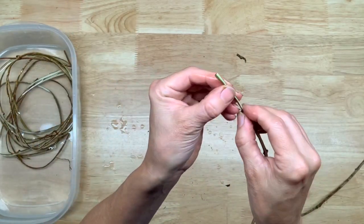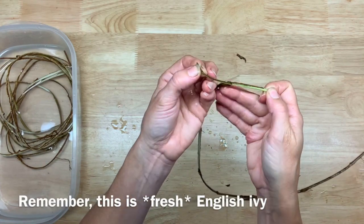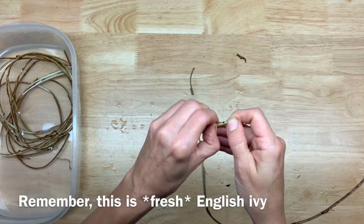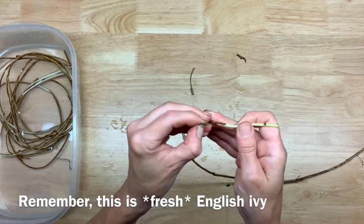Then you'll see the bark just wants to come off - it kind of peels like that. It was a very wet spring, and I harvested this right before we had this heat wave.